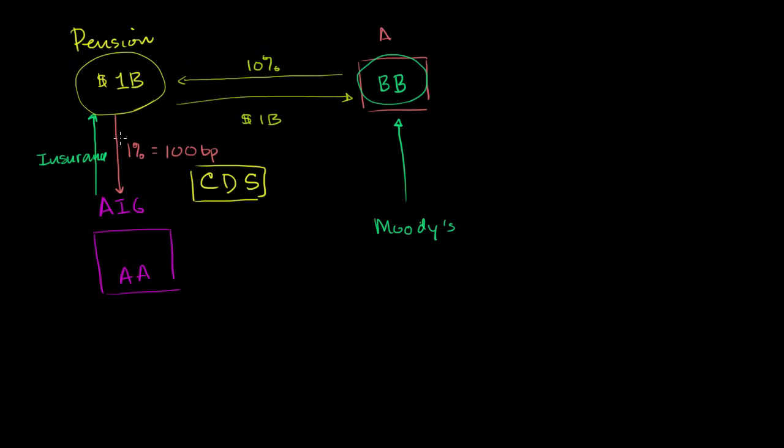And so you can imagine, it's really good money while no one is defaulting. But all of a sudden, when people start defaulting, then all of a sudden AIG is going to be in trouble. And all the people who thought they had, in effect, AA debt, because AIG was insuring it, might not.